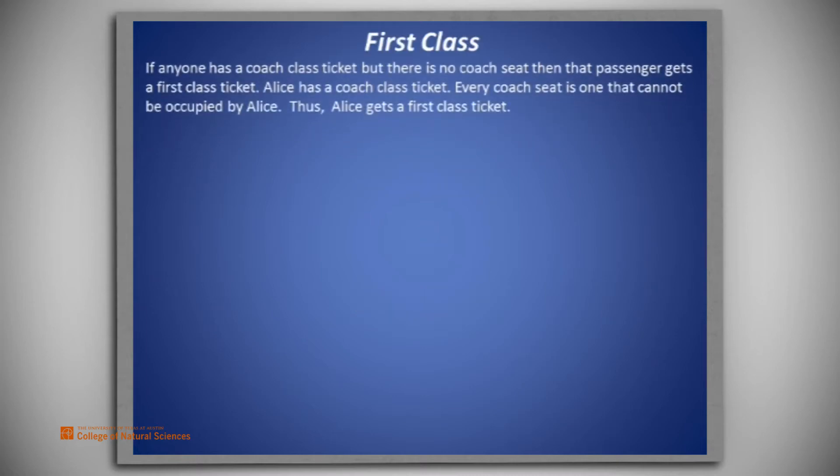If anyone has a coach class ticket, but there is no coach seat, then that passenger gets a first class ticket. Alice has a coach class ticket. Every coach seat is one that cannot be occupied by Alice. Thus, Alice gets a first class ticket.